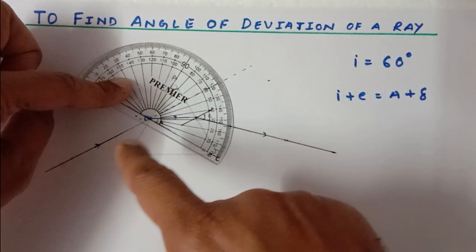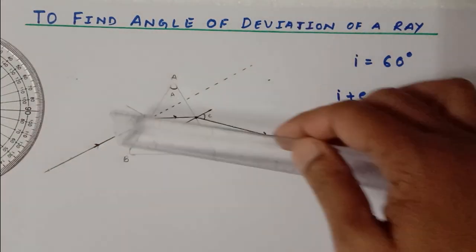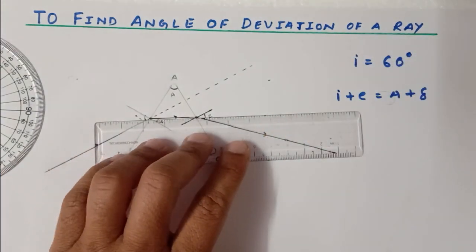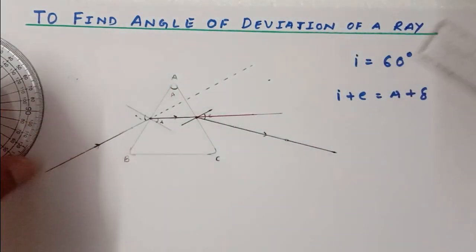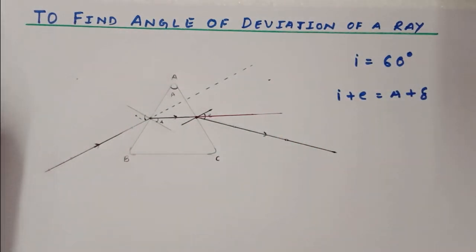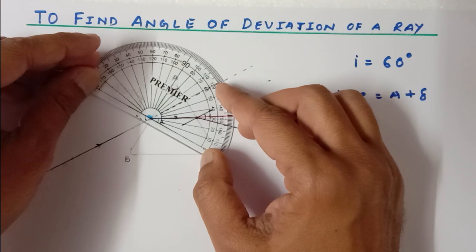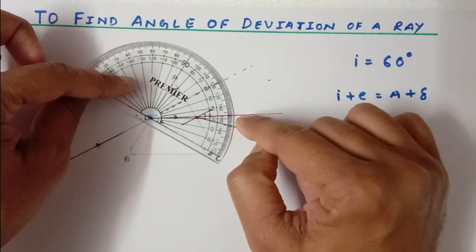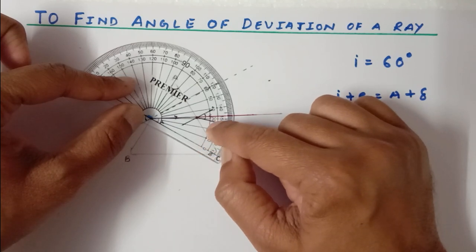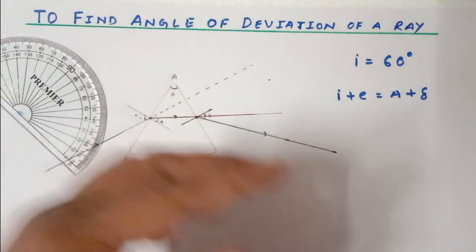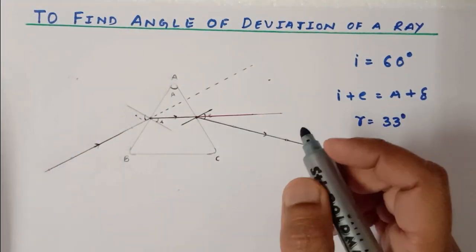It's a bit difficult to measure angle r, so I'm going to extend the refracted ray. Here is my refracted ray, and I'm going to extend it with this red line. This angle is the angle of refraction. The refracted ray is touching 0 degrees, 10, 20, 30, and 33 degrees. So the angle of refraction that I am getting is 33 degrees. Now I'm going to measure the angle of emergence.